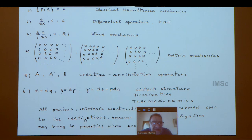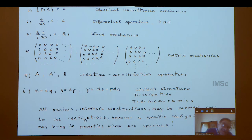With different realization of the Heisenberg-Weyl algebra: if you realize it with Poisson brackets, you get classical Hamiltonian mechanics. If you realize with d/dx, x and 1, you get differential operators and wave equations. If you realize as operators, you get wave mechanics. If you realize in terms of matrices, you get matrix mechanics. With creation and annihilation operators, you go to quantum field theory. If you take the dual point of view, you get contact structure for dissipation and thermodynamics.